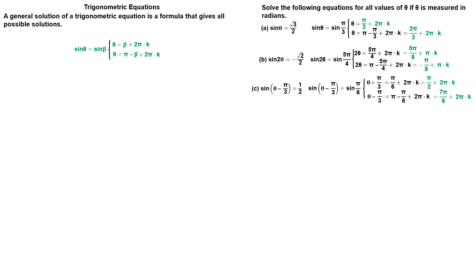Now we will be concerned with trigonometric equations that involve the cosine function. Suppose we want to solve the following equation: cosine of theta equals minus 1 half. On the unit circle, we put the reference angle 60 degrees, or pi divided by 3 radians, and we are looking for all the values of theta for which cosine will have the value of minus 1 half. Angles with the same cosine values meet the unit circle at points with the same x coordinates. To find angles with the same cosine values, draw a vertical line across the unit circle. Cosine of theta is negative in quadrant 2 and 3. One solution terminates in the second quadrant and the second solution terminates in the third quadrant. The angles have the same measure, but one is positive and the other is negative.